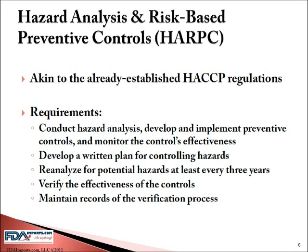Under the HARPC provision, each facility must engage in a certain series of tasks. First, each food facility is required to conduct a hazard analysis to identify and evaluate known hazards that are reasonably likely to occur unless they're controlled. These hazards might be biological hazards, chemical hazards, natural toxins, or maybe intentionally added to food. When you think of intentional food hazards, you think food security. The manufacturer subject to HARPC requirements will also have to prepare a written analysis of these hazards and be prepared to present it to the FDA.